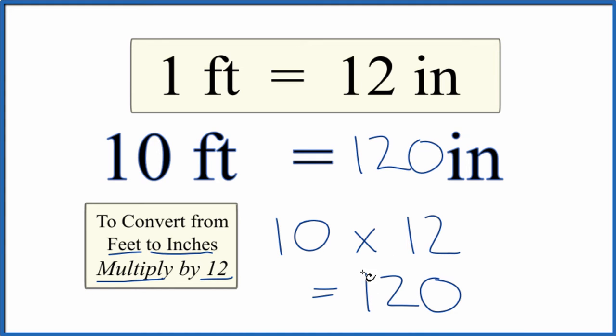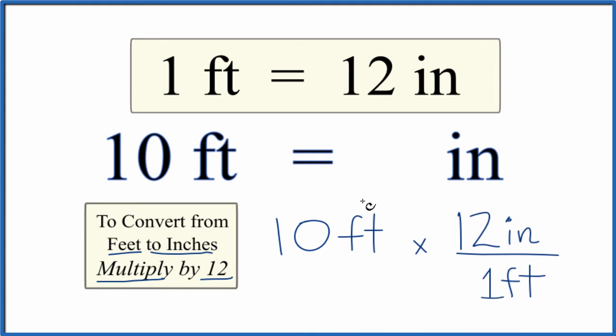Let's do this again with the units written in. So we're going to take our 10 feet, multiply by 12, but there's 12 inches in 1 foot, 12 inches per foot. So we have feet on top and the bottom. They cancel out, and we're left with inches.